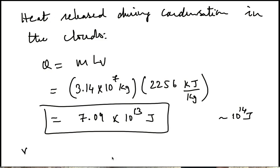And just to put this in perspective, the annual US consumption of energy is about 10 to the 20 Joules. So this is one millionth times that. Just one thundercloud releases one millionth times the energy of the annual US consumption of energy. That's pretty large.